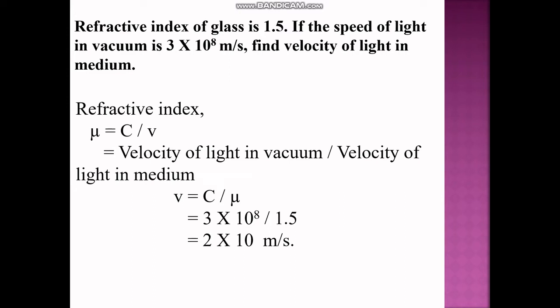Now, refractive index μ is given by the velocity of light in vacuum upon the velocity of light in the medium. So: refractive index = velocity of light in vacuum ÷ velocity of light in medium.